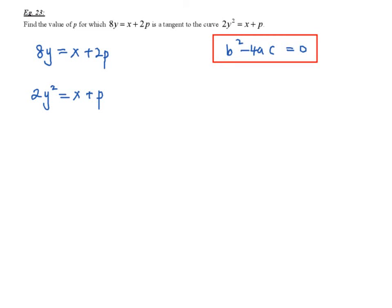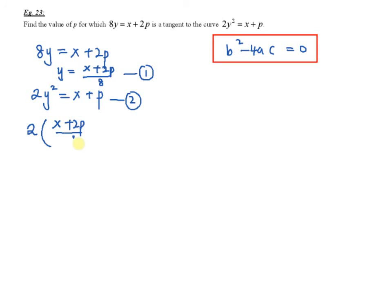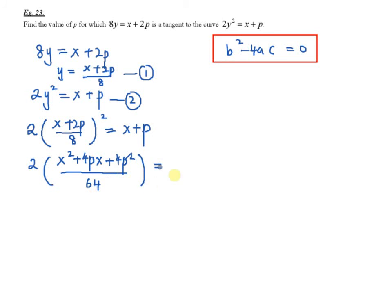The condition depends on whether b squared minus 4ac is equal to 0, greater than 0, or less than 0. Since it is a tangent to the curve, b squared minus 4ac equals 0. Next we do elimination — we eliminate y. Making y the subject from the first equation gives y equals (x plus 2p) over 8. Substituting into equation 2: 2 times (x plus 2p over 8) squared equals x plus p. Expanding the numerator: x squared plus 4px plus 4p squared over 64.